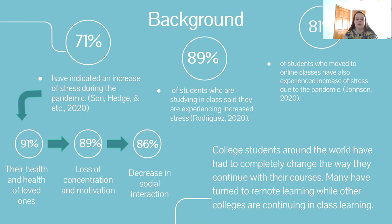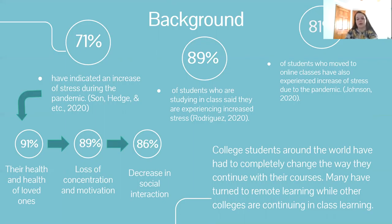College students around the world have completely changed the way they continue courses. Many have turned to remote learning while others are continuing in-class learning. There's also hybrid learning, which combines both in-class and online learning — students switch between them during the week on certain days. Everything has changed, and they're talking about changing over again in the future.